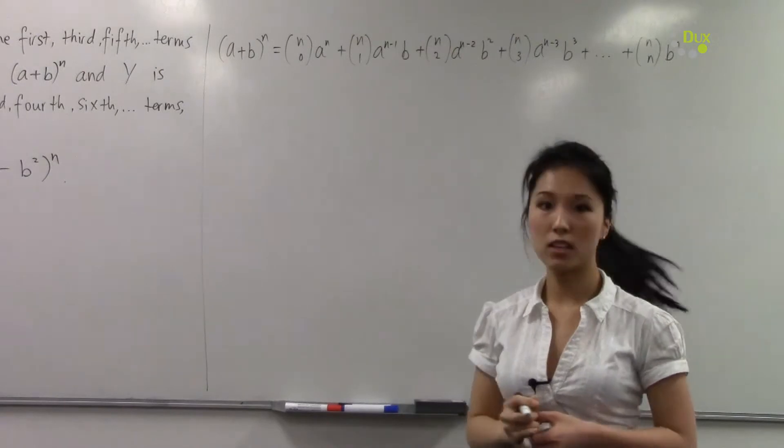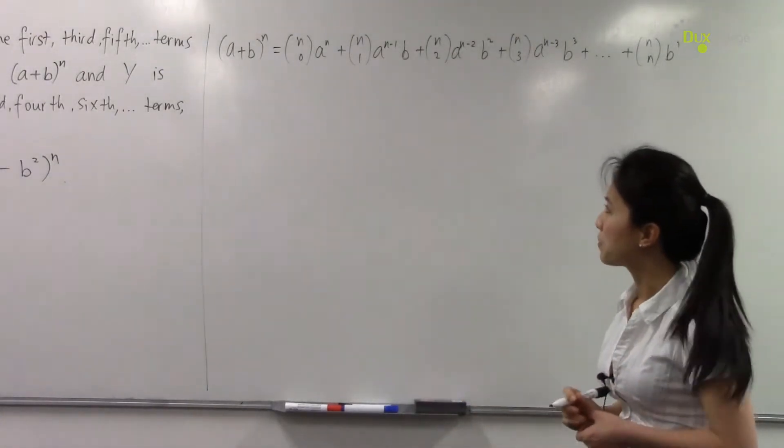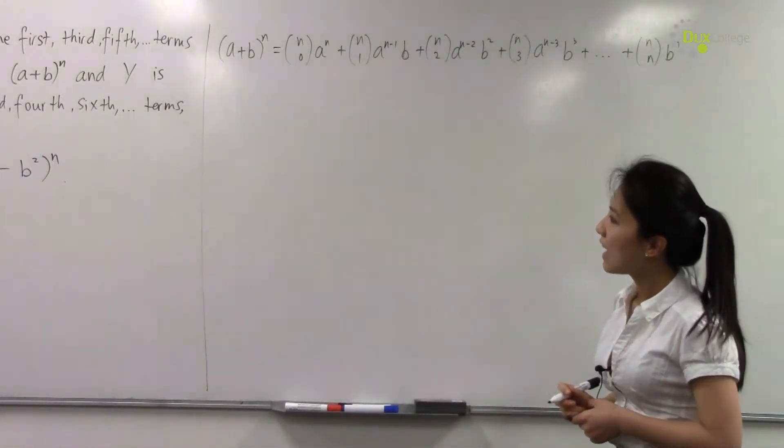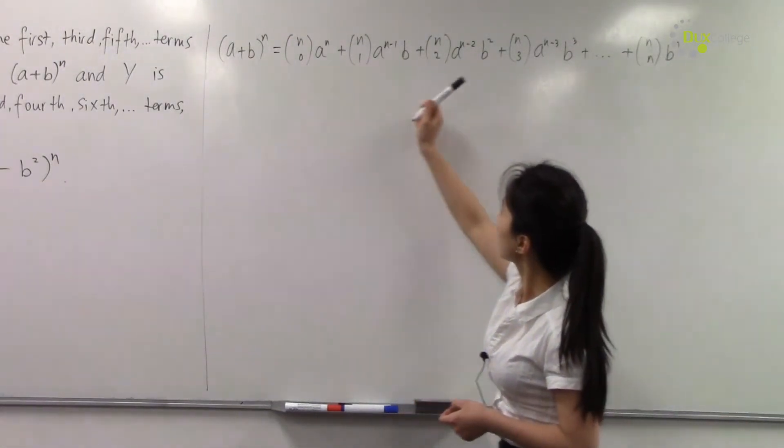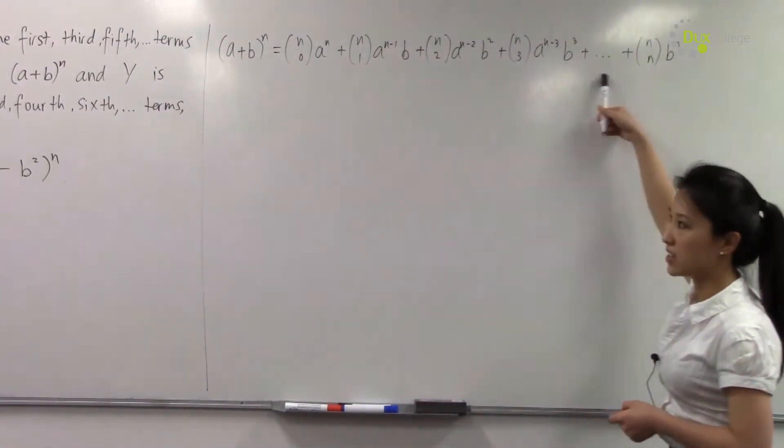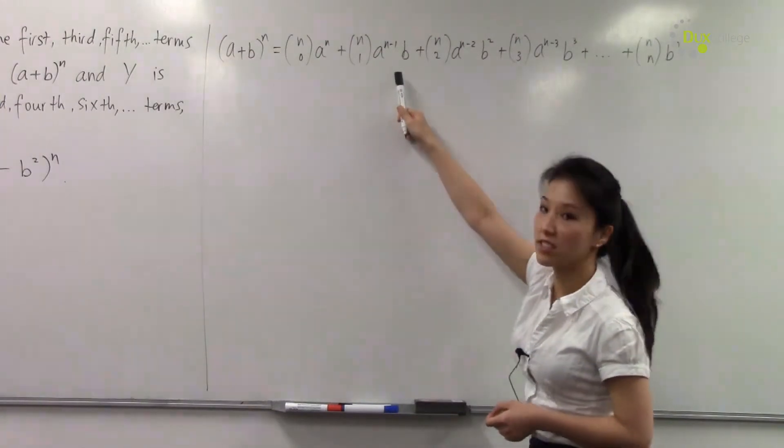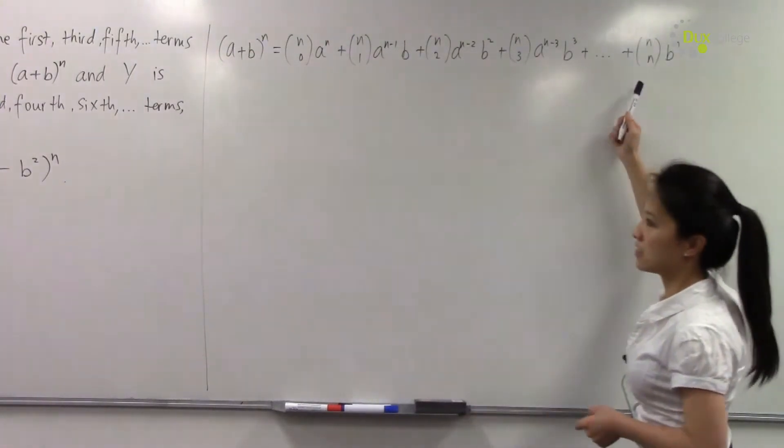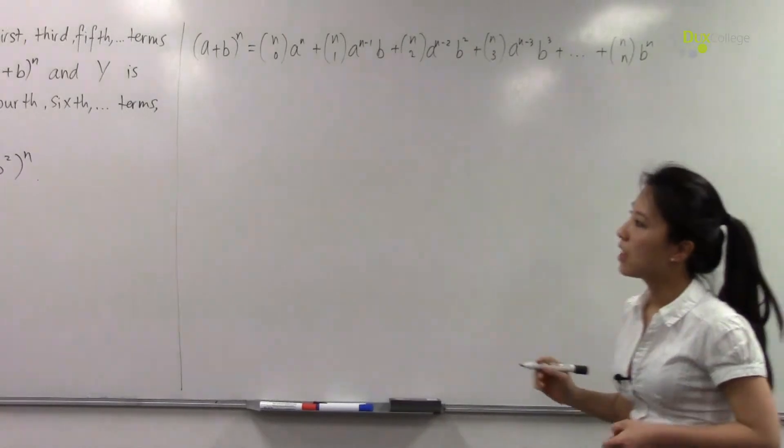So that's the expansion of (a+b)^n. We can see that X represents the first, third, fifth, etc. terms, and Y represents the second, fourth, sixth, etc. terms.